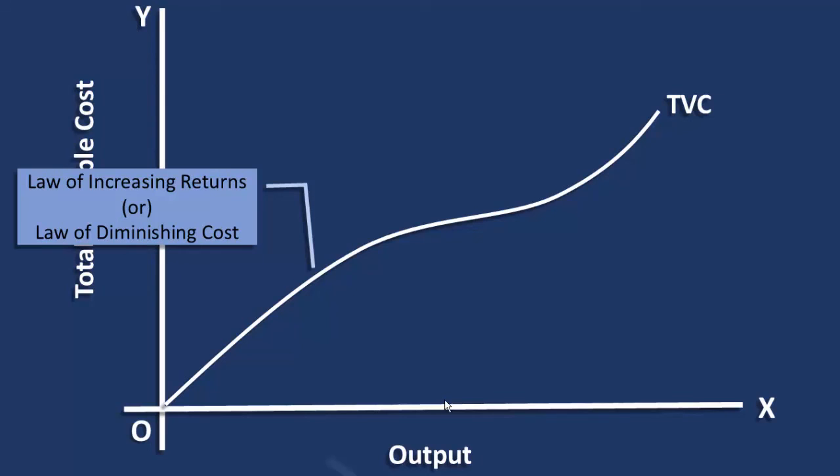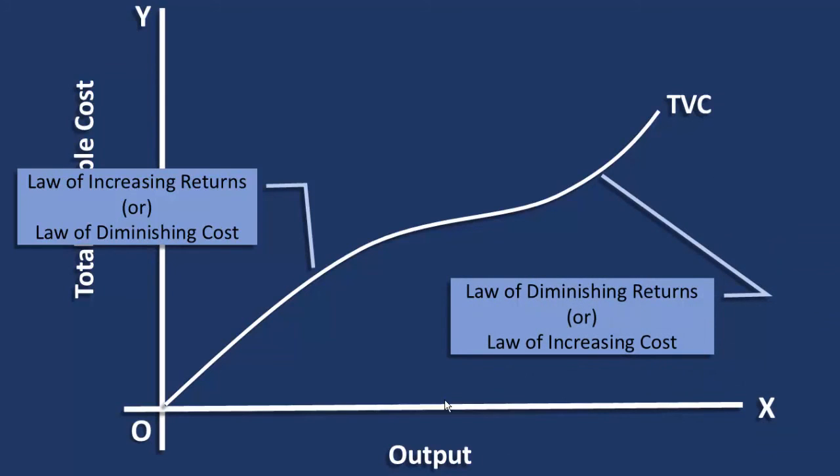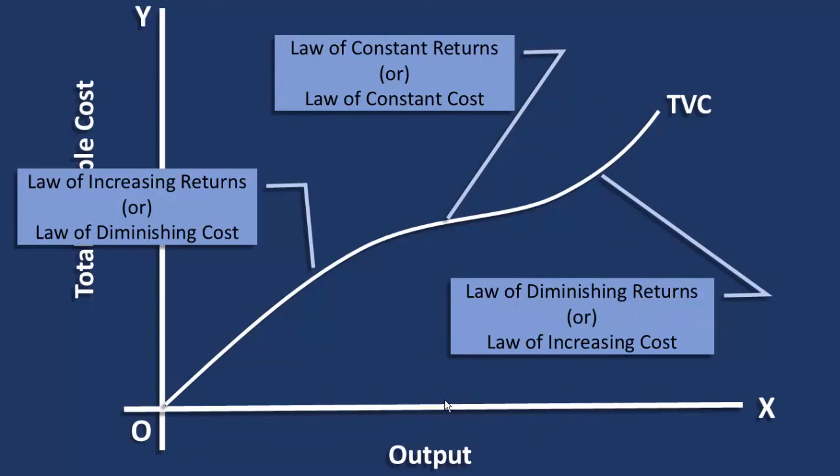The curve becomes concave upwards when the law of diminishing returns or law of increasing cost has started operating in production. In between the two, there is a point of inflection. Here, the law of constant returns or law of constant cost operates. Ultimately, these laws determine the shape of the total variable cost curve.